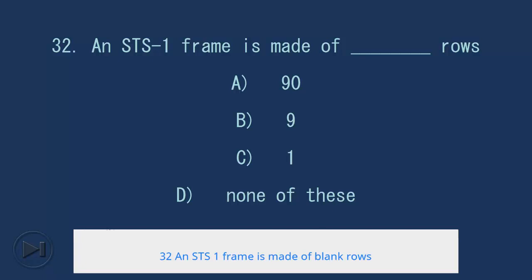32. An STS-1 frame is made of blank rows. A. 90, B. 9, C. 1, D. None of these. Answer: B. 9.